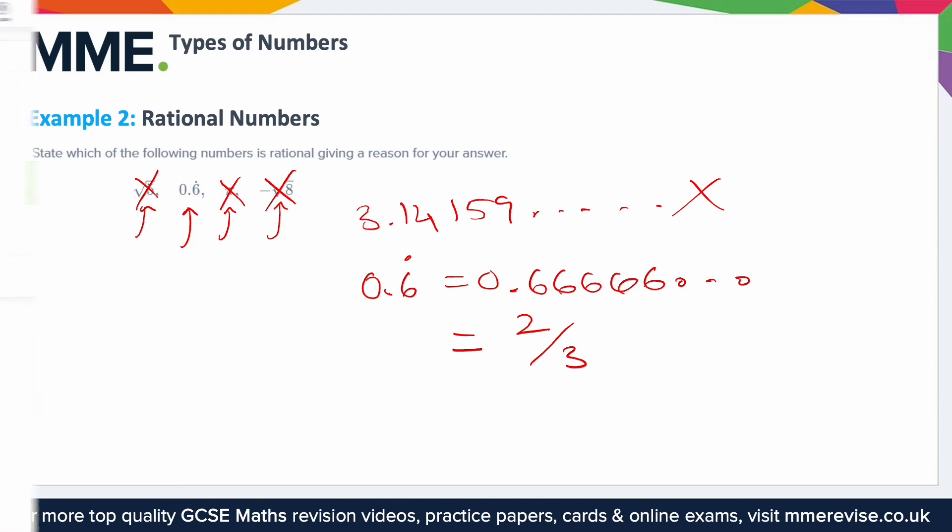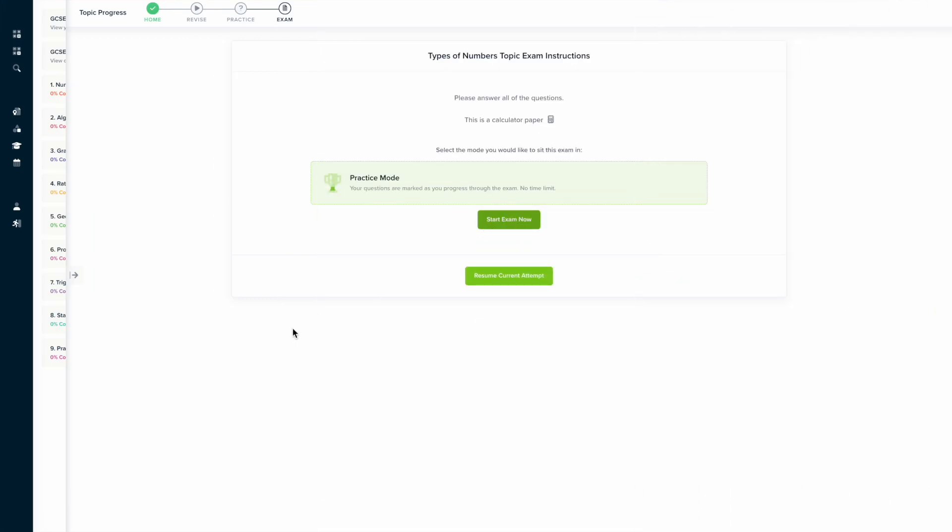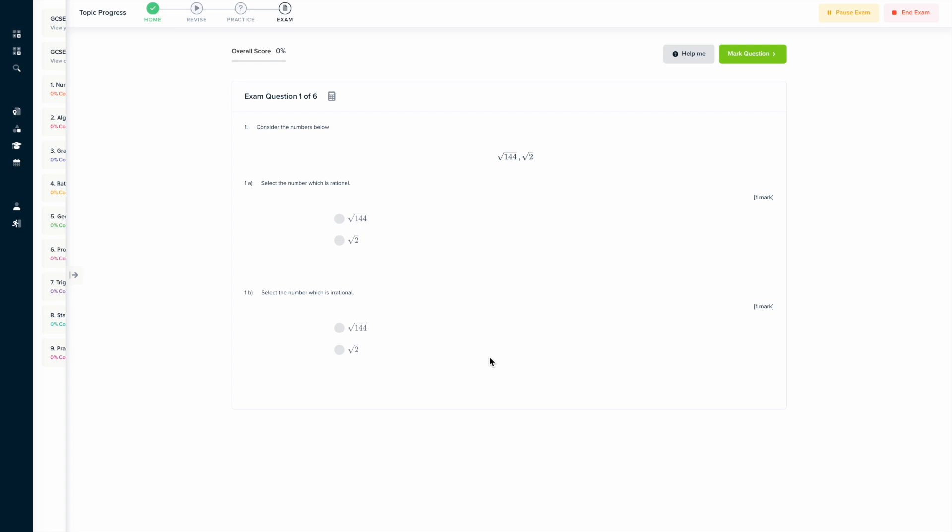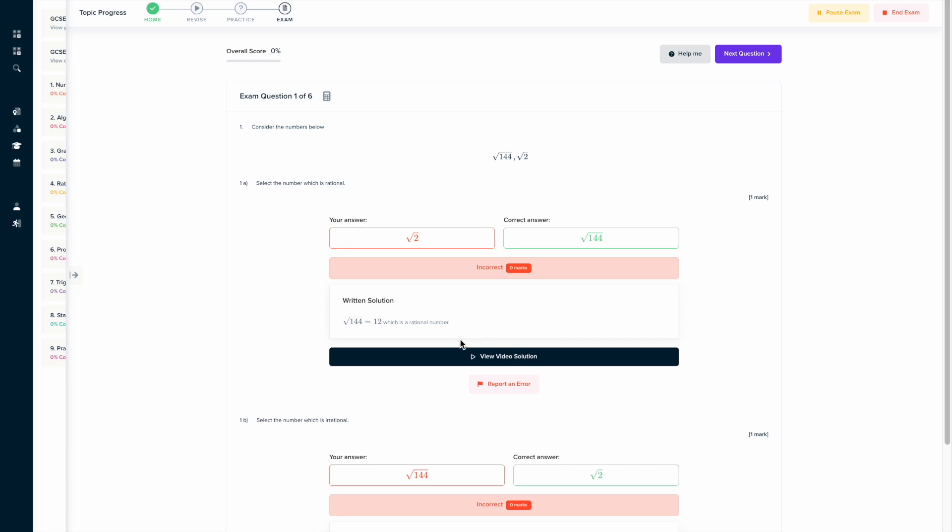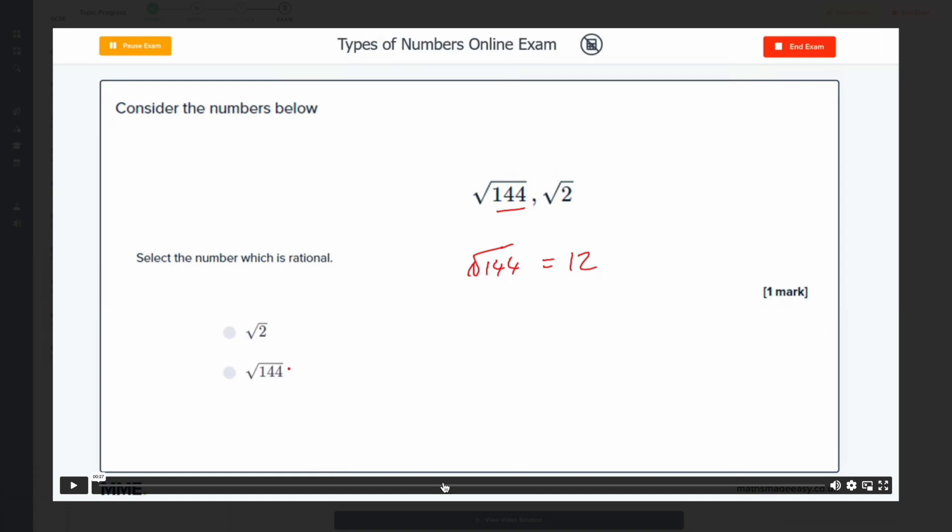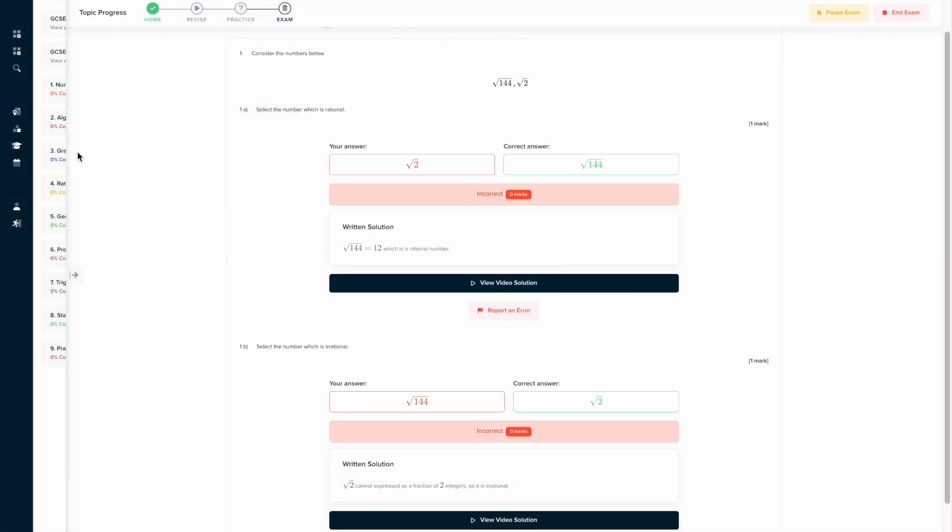If you found this video useful, why not try out our topic exam on our learning platform? Here you can find a series of questions to assess your knowledge and get instant feedback on how you did. So here I can see a written solution explaining how I should have solved this problem and also a video solution where someone will talk me through it to say exactly how I should have done it if I'm still not sure. So the learning platform includes every topic on the GCSE course.